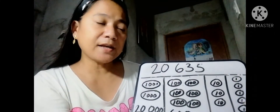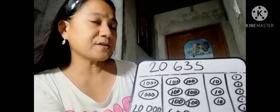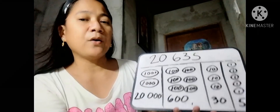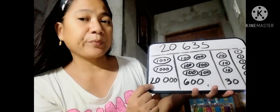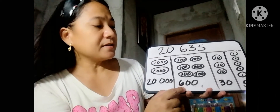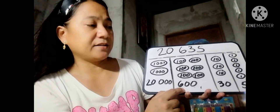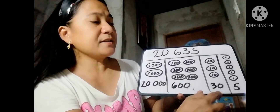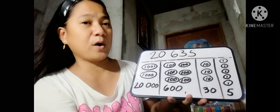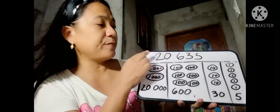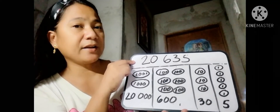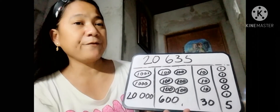This table is used to visualize 20,635. To visualize 20,635, we have 2 ten-thousands, 0 thousands, 6 hundreds, 3 tens, and 5 ones — making it 20,635.